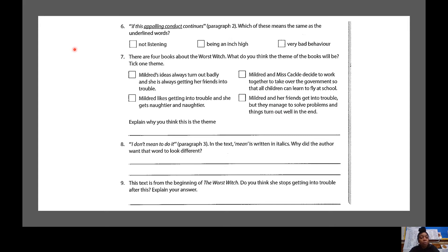Question number seven, there are four books about the worst witch. What do you think the theme of the books will be? Tick one theme. Theme one, Mildred's ideas always turn out badly and she's always getting her friends into trouble. Option number two, theme number two, Mildred likes getting into trouble and she gets naughtier and naughtier. Theme number three, Mildred and Miss Cackle decide to work together to take over the government so that all children can learn to fly at school. Or theme number four, Mildred and her friends get into trouble but they manage to solve problems and things turn out well in the end.